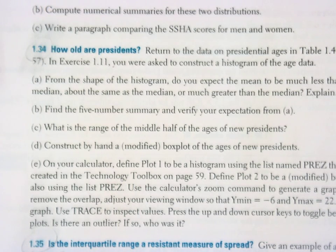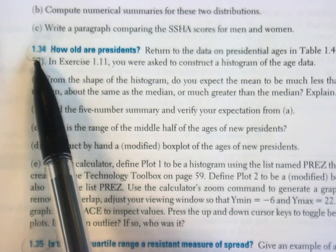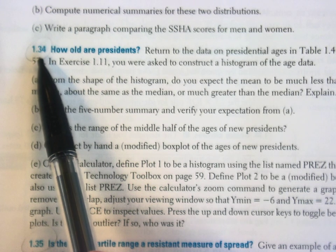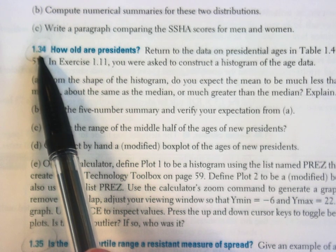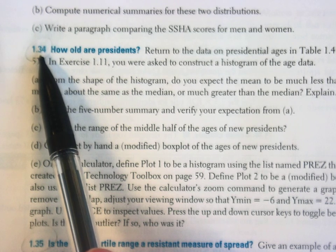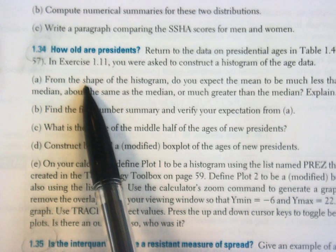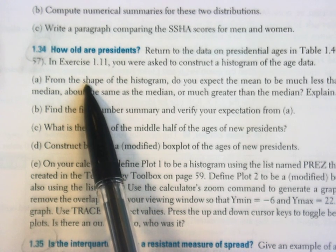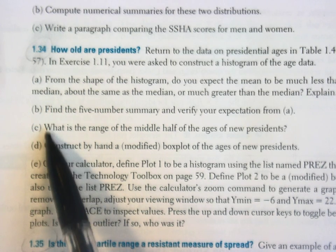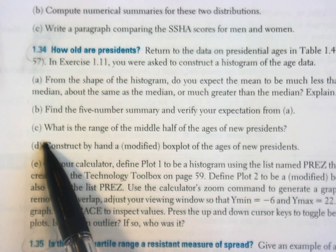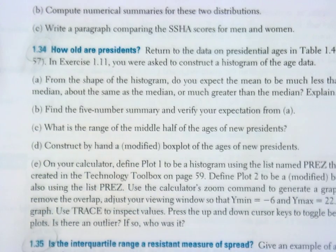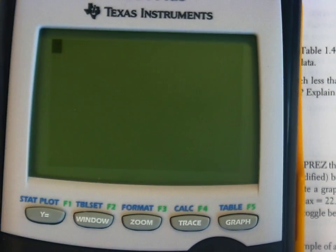Hi, guys. Let me give you a few hints about your two homework questions. For question 1.34, we are recycling the data about the ages of the presidents at inauguration. We graphed the histogram on the graphing calculators in class, so you may already know the answer to part A. You can do parts B, C, and D by hand using the data on page 57. However, we already saved that data onto your graphing calculator, so we can also just recycle what you've already done.